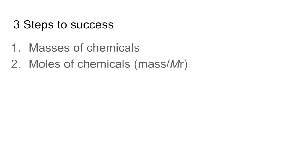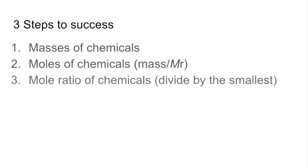So just summarizing the three steps to success to always get these right. First, put the masses of the chemicals in. I would advise you write the unbalanced equation out and make columns for all the chemicals. So masses first. Turn those masses into moles - that's mass divided by MR. And then turn those moles into a mole ratio by dividing everything by the smallest.